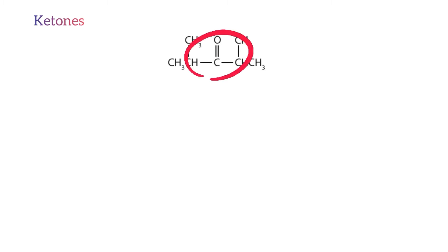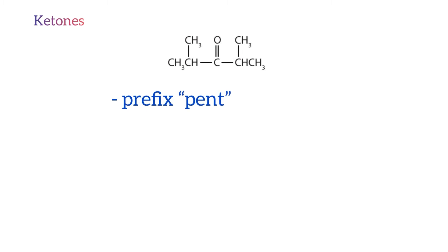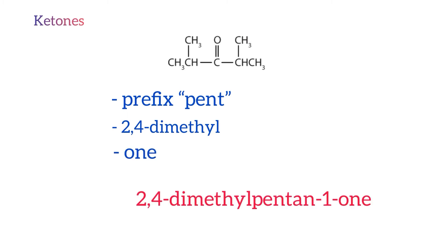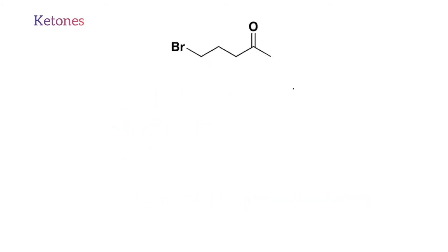Ketones can be easily identified as there is a carbonyl functional group in the middle of the main chain. Here is an example: as you can see there are five carbon atoms in the main chain, therefore the prefix is 'pent'. There is a methyl group attached on carbon two and carbon four, therefore the locant is '2,4-dimethyl'. Because this molecule is a ketone, the name ends with '-one', giving 2,4-dimethylpentan-2-one.